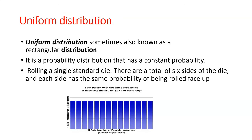Let us come to the uniform distribution. This distribution is sometimes also known as the rectangular distribution, because the graph is formed like a rectangle. In this probability distribution, it has constant probability. The scenario where we exactly use this uniform distribution is like when you are rolling a die — there are six sides and each side has the same probability of being rolled face up. So when there is equal probability for all events, we use the uniform distribution.